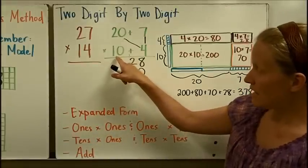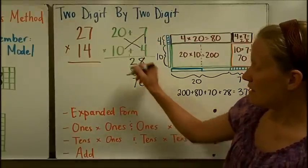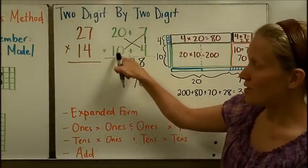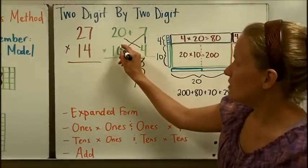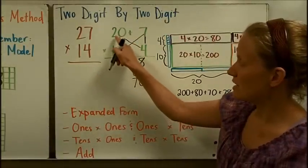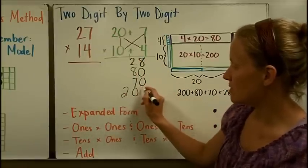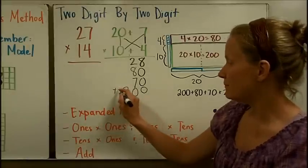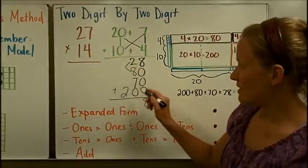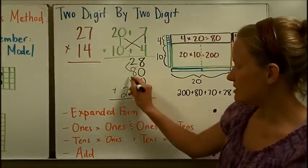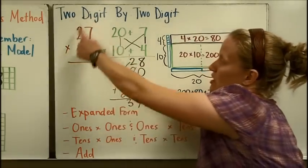Now I do the tens times the ones: ten times seven is seventy. And then the tens place times the tens place number: ten times twenty is two hundred. Then I add them all up. In the ones place I get eight; these two together make ten, plus seven is seventeen. I get three hundred seventy-eight as my product for this problem.